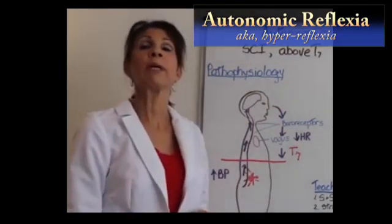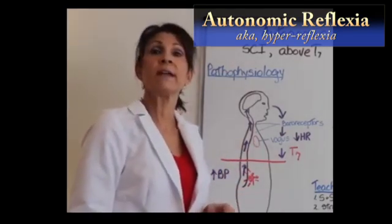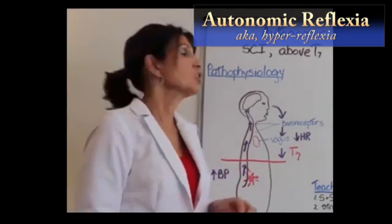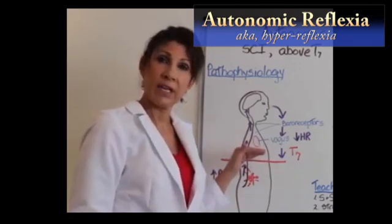We're going to talk about autonomic dysreflexia, also called autonomic hyperreflexia. This is a medical emergency that afflicts spinal cord injury patients when the injury falls above the level of T7.